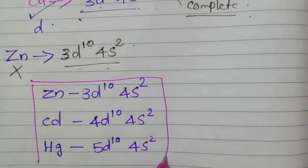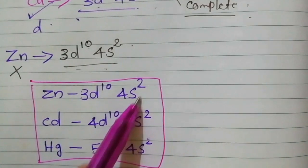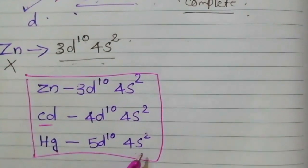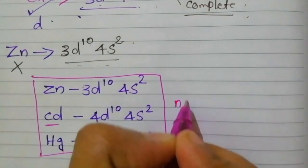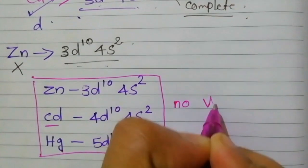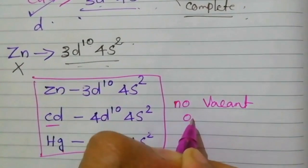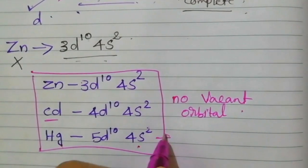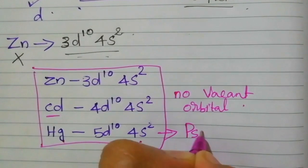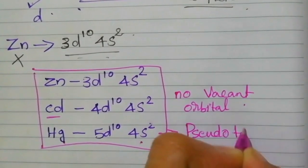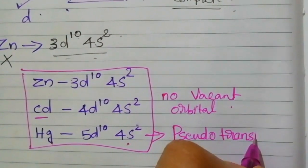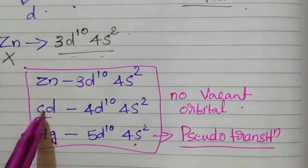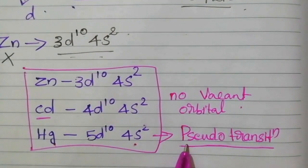Not only zinc — other elements show the same thing. Zinc has 3D¹⁰ 4S², cadmium (2nd D series) has 4D¹⁰ 4S², and mercury has 5D¹⁰ 4S². These three elements have completely filled D orbitals with no vacant D orbitals, and this holds for both the ground state and their common oxidation state (maximum +2). Therefore, these three elements are called pseudo transition elements — they are placed in the transition element block but do not exhibit all the properties of transition elements.